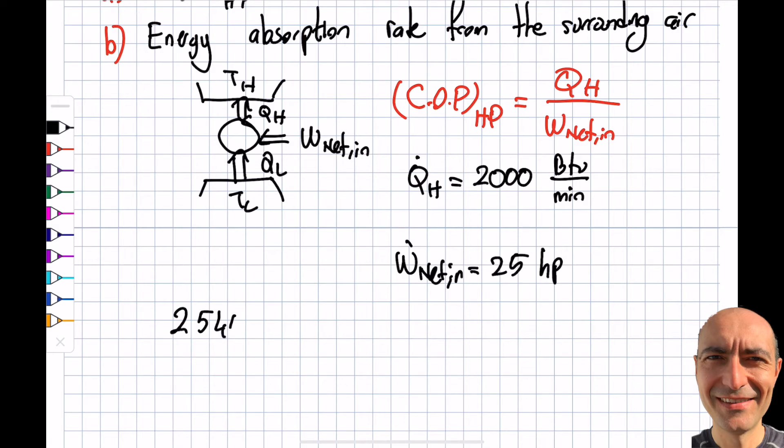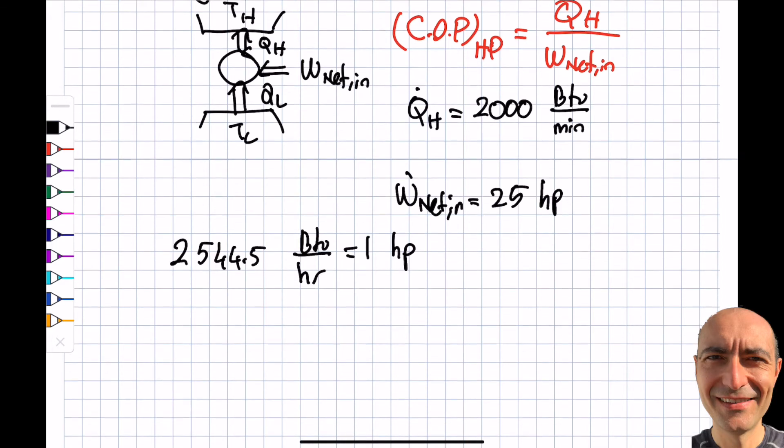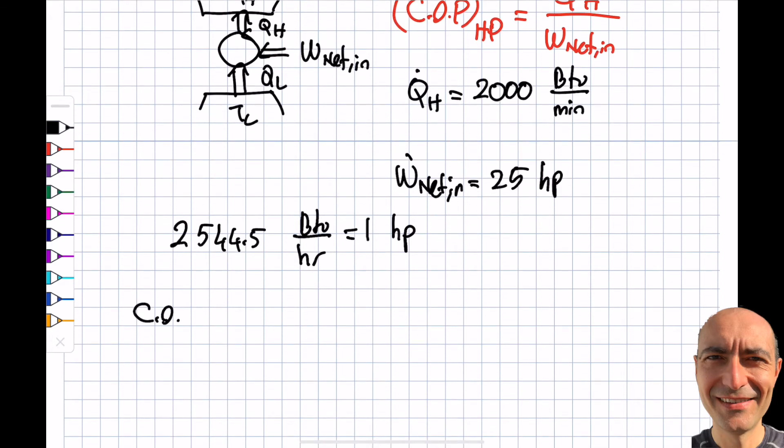The conversion is 2544.5 BTU per hour equals one horsepower. I'll convert everything to BTU per hour. COP of the heat pump is Q_dot_H over W_dot_net_in. Q_dot_H is 2000 BTU per minute, so over an hour that's 2000 times 60. The denominator is 25 horsepower times 2544.5 BTU per hour per horsepower.